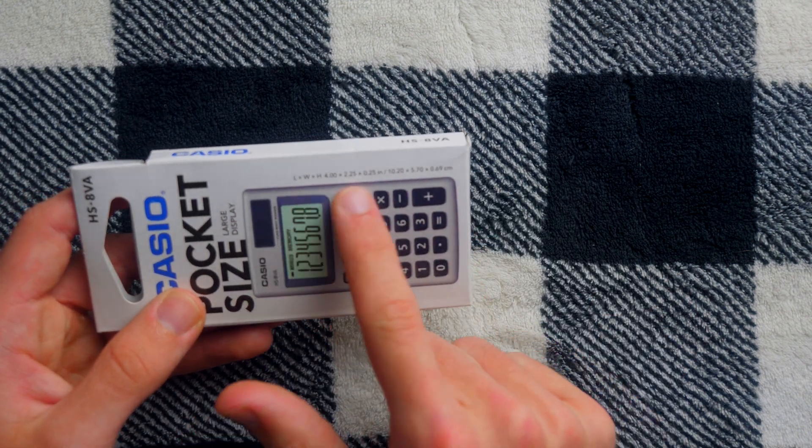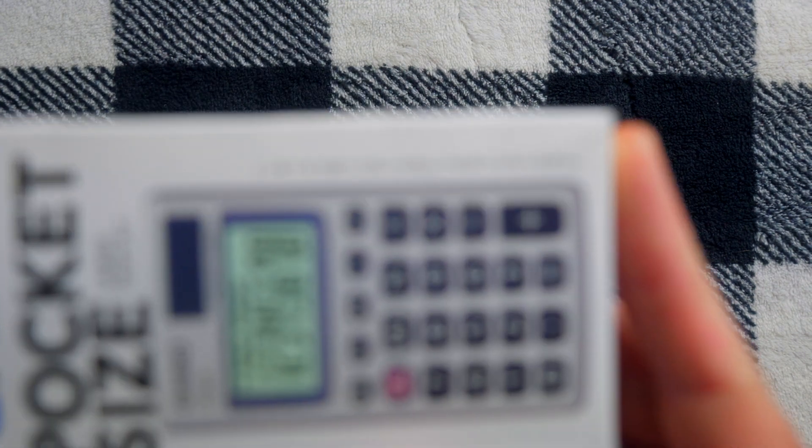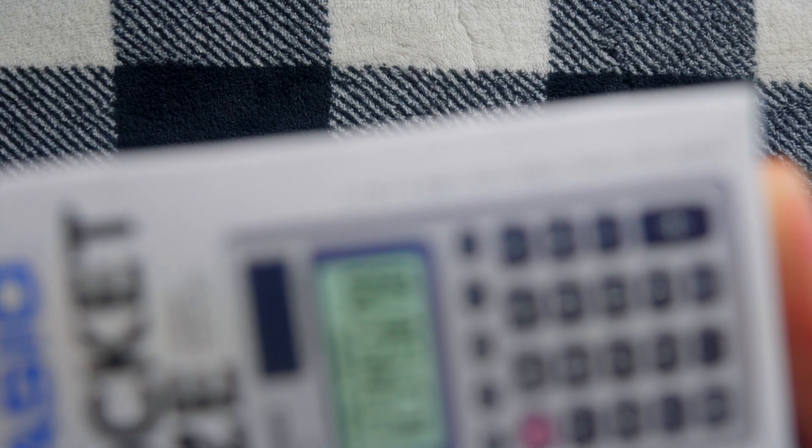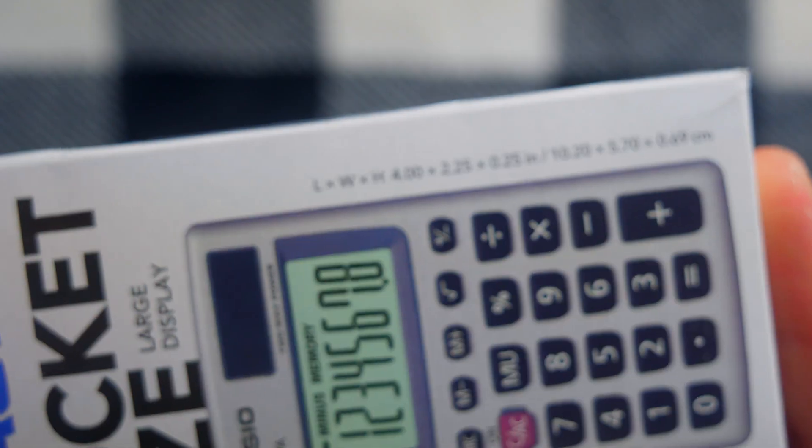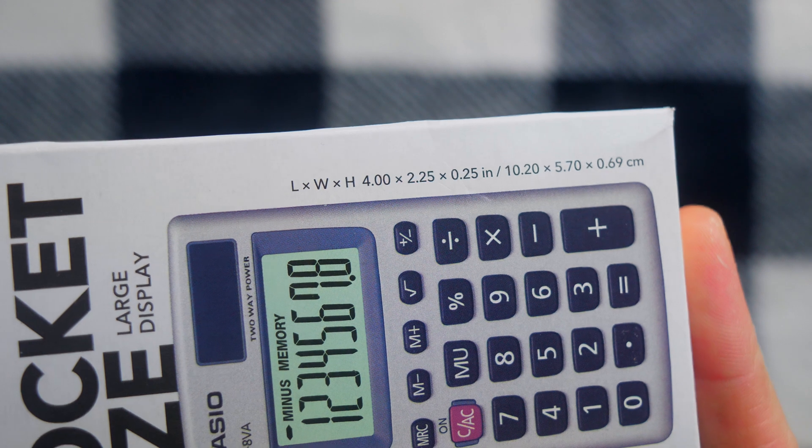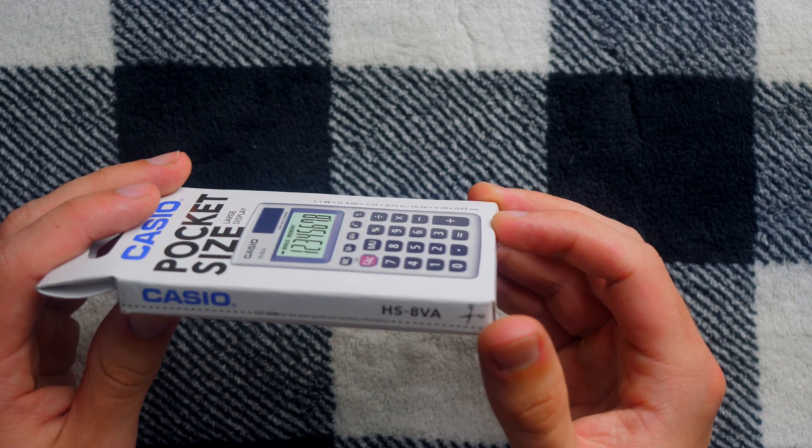The dimensions are here. It says to be a length of four inches, a width of 2.25 inches, and then a height of 0.25 inches. It then also gives the units in centimeters, but I don't understand centimeters, so it doesn't really matter.